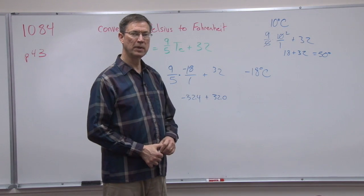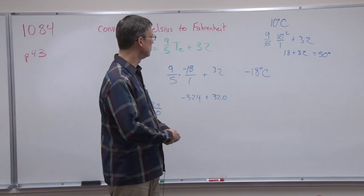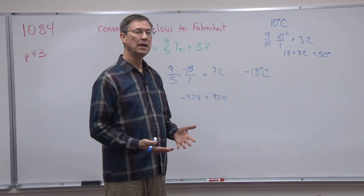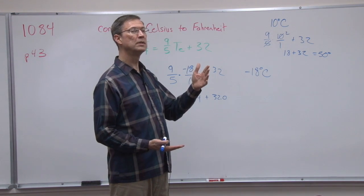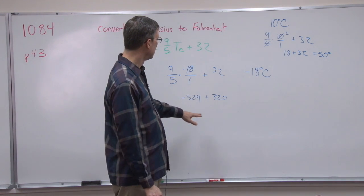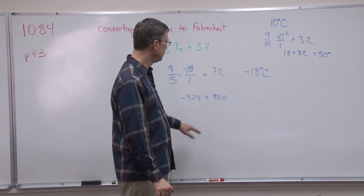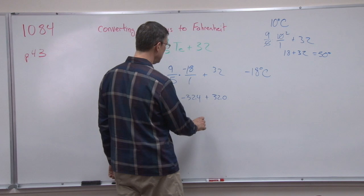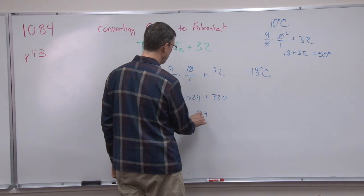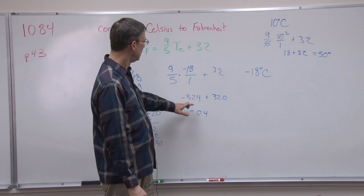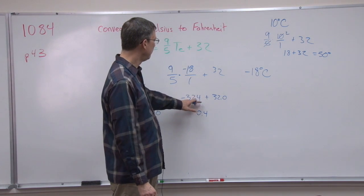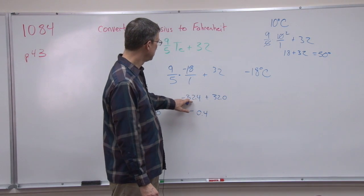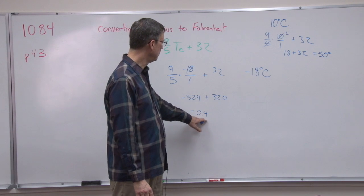So I have negative 32.4 plus positive 32.0. And if you remember with the positive and negative scales, well, just think about this as being on a temperature scale. If you were at negative, let's say negative 2 degrees, and then the temperature went up 3 degrees, now you're up into the positive zone, 1 degree. So I'm going to have to subtract 32 from 32.4, find the difference between those two. And so the answer comes out to be 0.4 with a negative. So on the negative scale, negative 32.4, and I go in the positive direction, 32, but I'm not quite at 0 yet. I'm still 0.4 degrees in the negative.